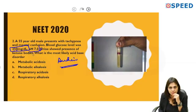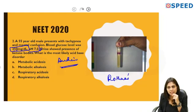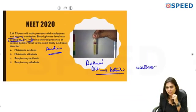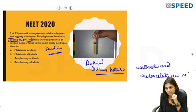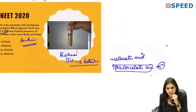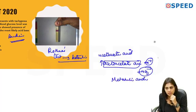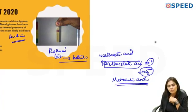Urine showed presence of ketone bodies. The most likely acid-base disorder is shown by Rothra's test — the purple ring indicates ketone bodies. When ketone bodies accumulate in circulation, for example acetoacetic acid, it dissociates into acetoacetate anion and H+. This H+ reacts with and utilizes bicarbonate present in the plasma, causing metabolic acidosis. So diabetic ketoacidosis is a form of metabolic acidosis.